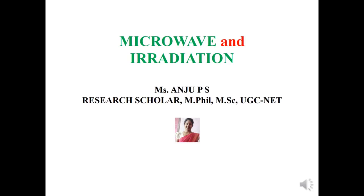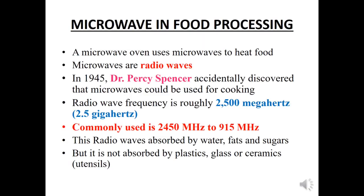Hi all, I am Anju Piers and today I am talking about microwave and irradiation in food processing. A microwave oven uses microwaves to heat food. Microwaves are radio waves. In 1945, Dr. Percy Spencer accidentally discovered that microwaves could be used for cooking.